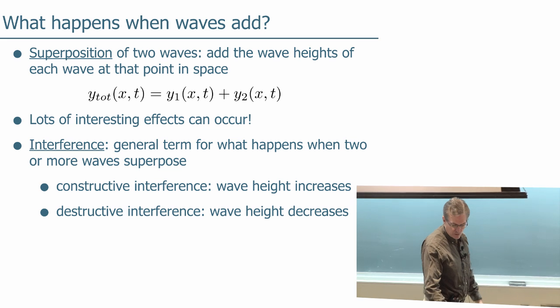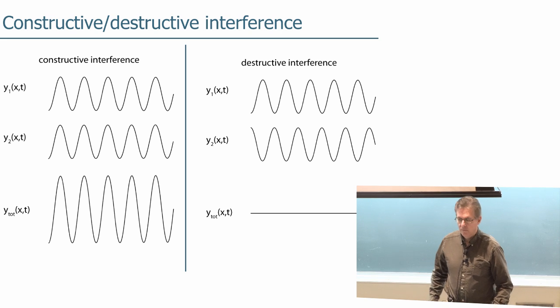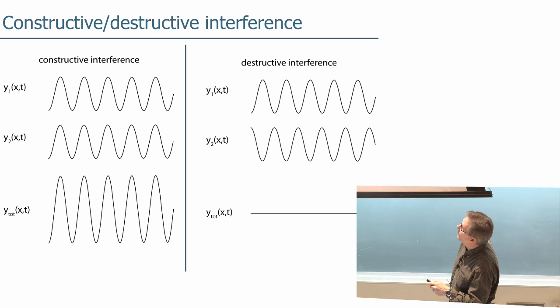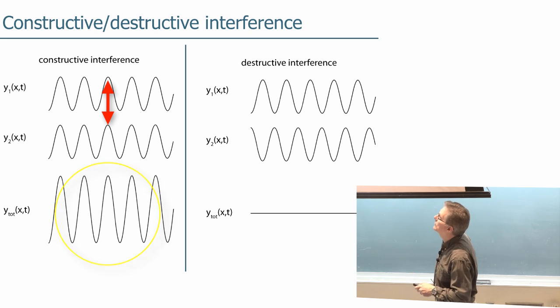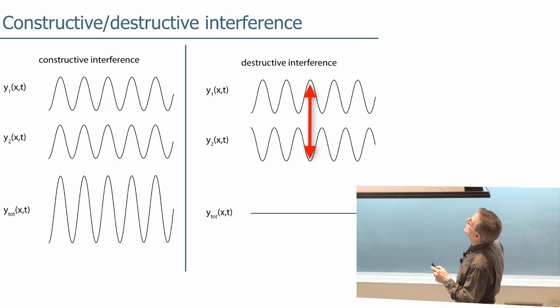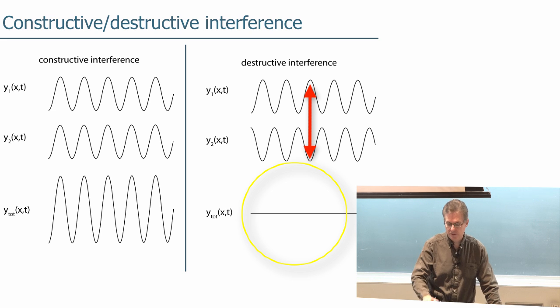And of course you can have anything in between as well. So there's our two waves, y1 of x and t and y2 of x and t. And if they line up so that the peaks are on top of, occurring at the same place in the same time, you get constructive interference, you get a wave which is twice as big as the original one, these two have the same amplitude. Whereas if they're opposite, if the peaks of one line up with the valleys of the other one, then it adds to identically zero. That's total constructive interference and total destructive interference.